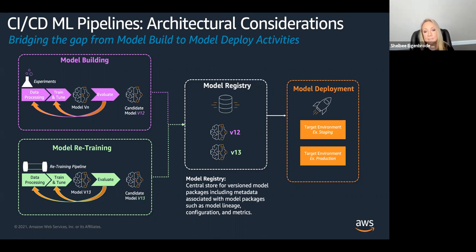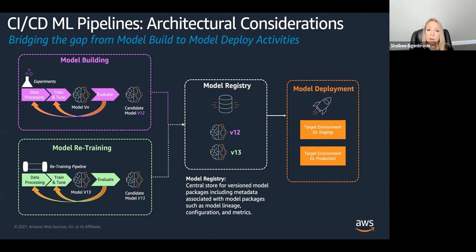One of the things I always encourage teams to have is a model registry in place. The reason is not only because it helps you manage versions of models at scale as a central store for model metadata, but it contains everything about how that model was built — what training image was used, what training data was used — and how it performed according to the objective metric you're trying to optimize for. For a specific version of a model: where's it deployed? How is it deployed? How is it performing over time? All of those things are really important to be able to scale and manage models, especially multiple versions of models.